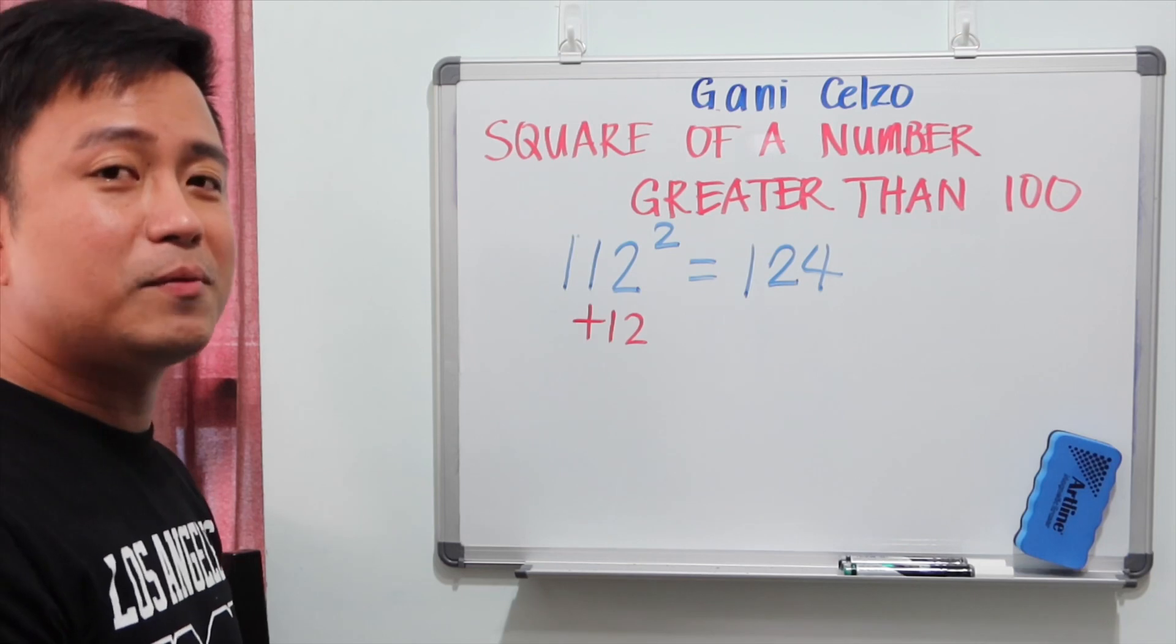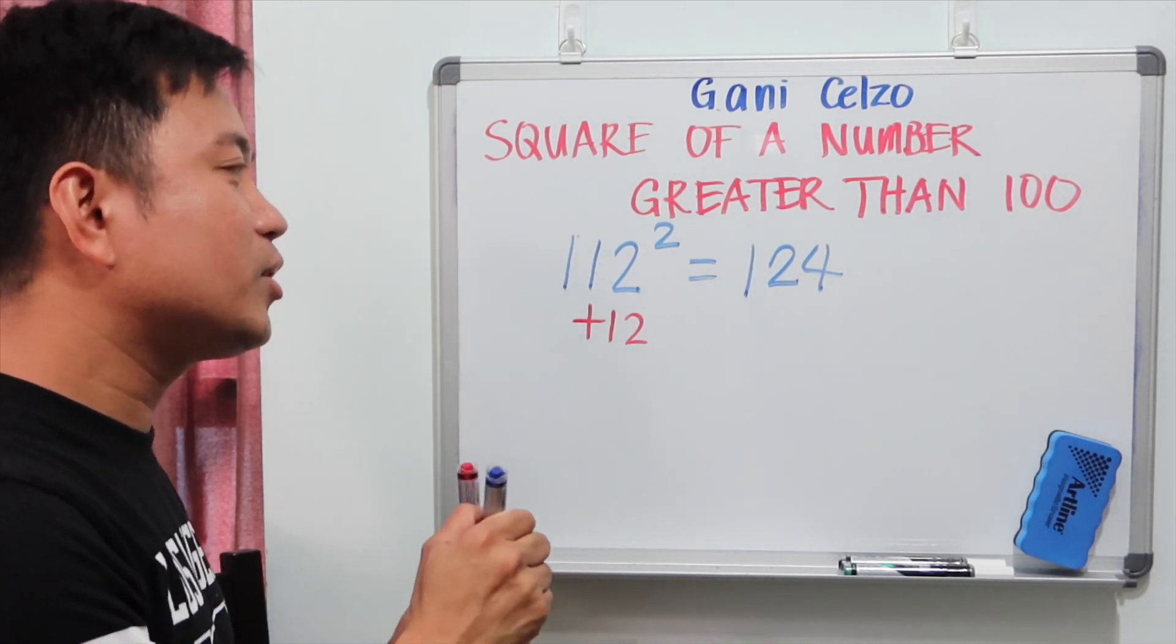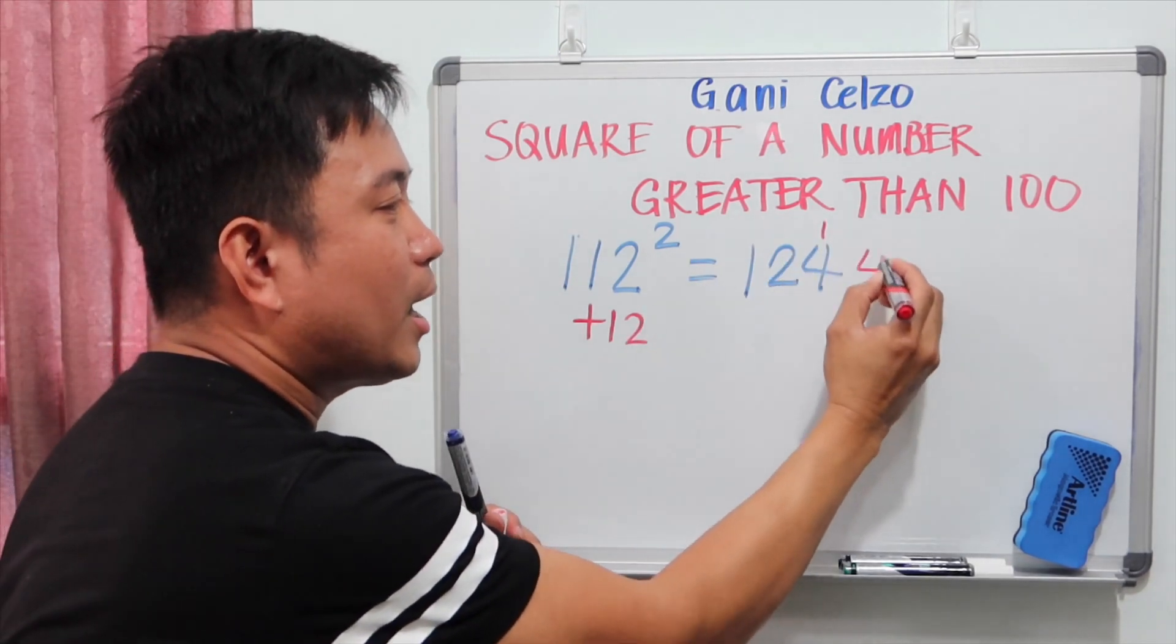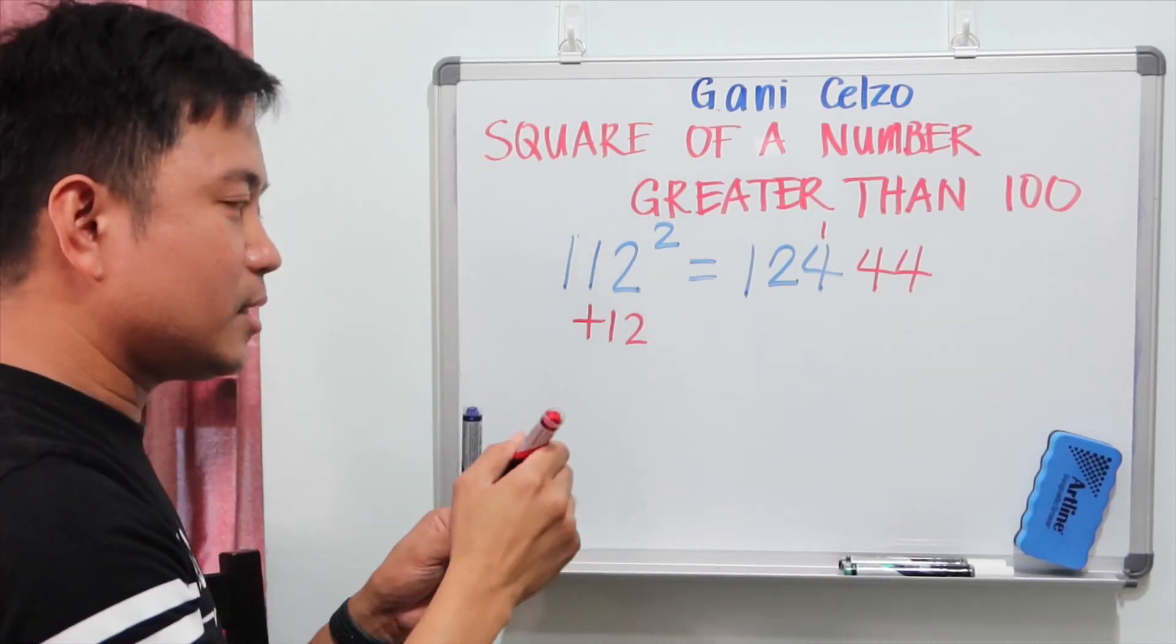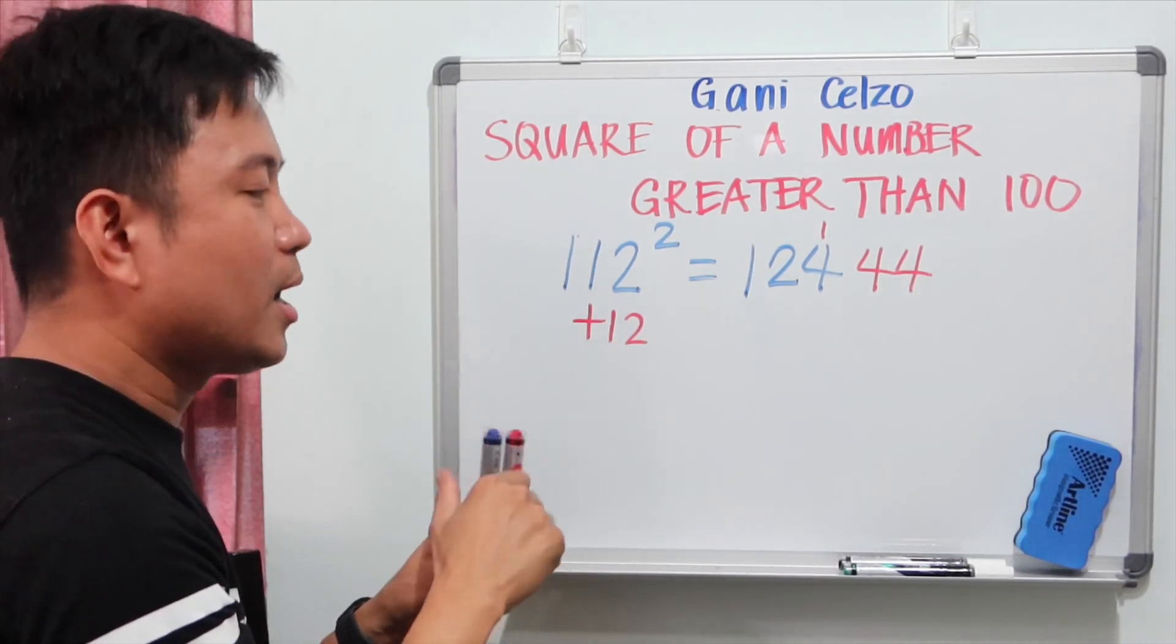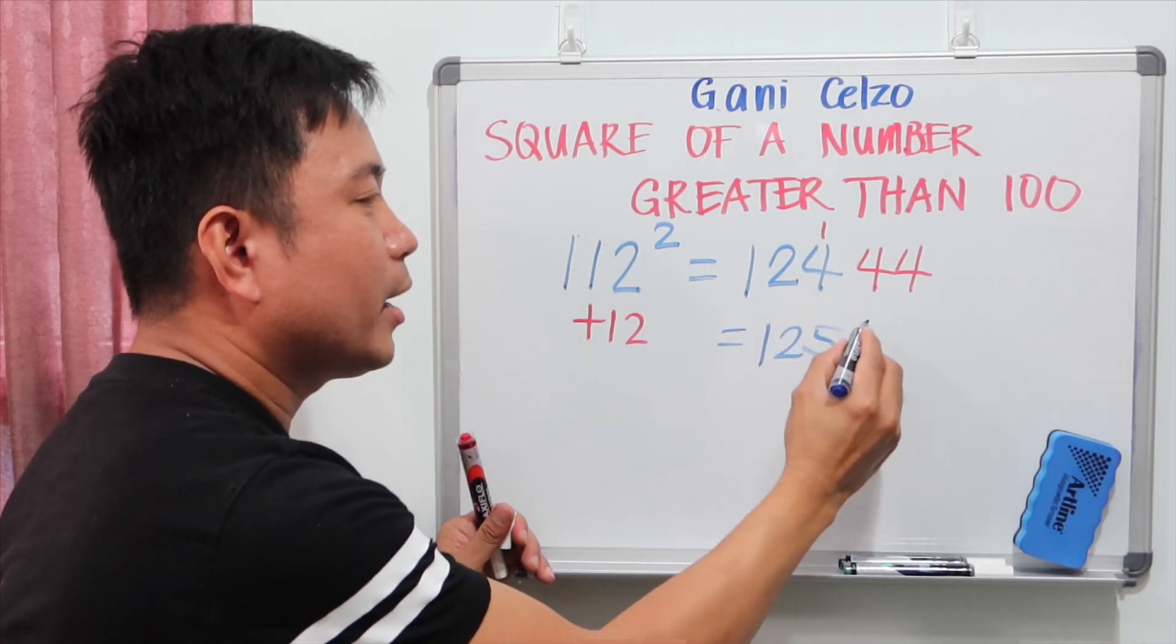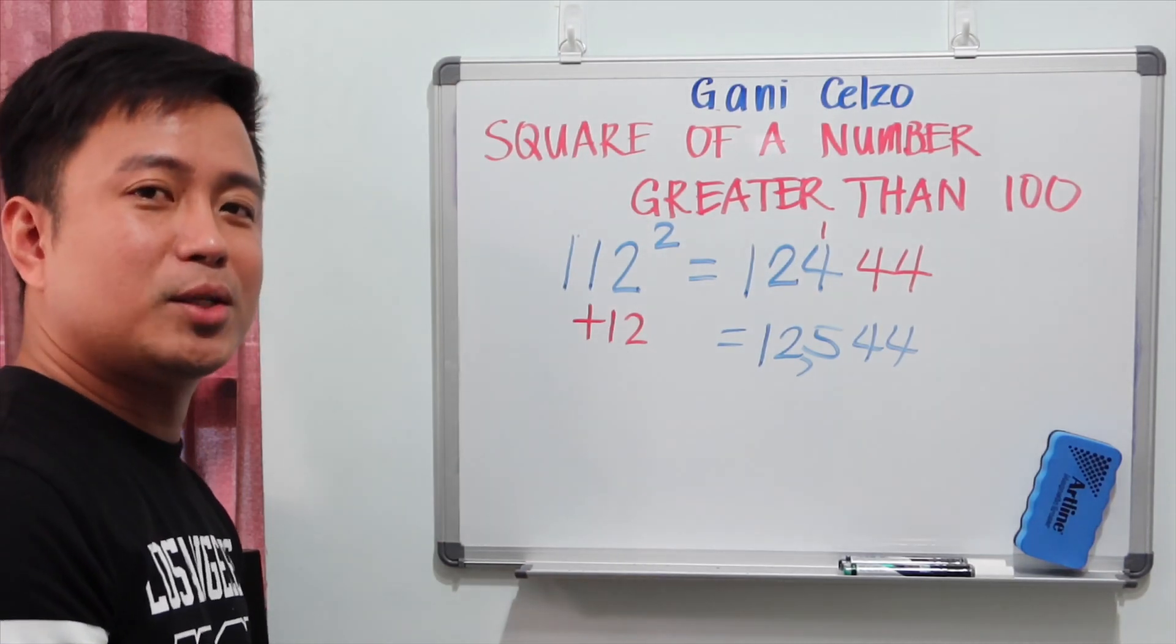If I do 12 square, that's the tricky part, that's 144. I will only write two numbers here, which means instead of 124, I will make that 1, 2, 5, 4, 4. So 12,544.